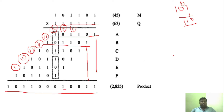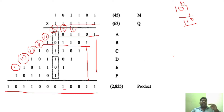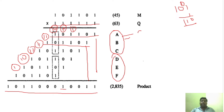Now, for carry save addition of summands, we group these six partial products: group A, B, C together and group D, E, F together. The computer performs these in parallel. Adding group A, B, C with carry save addition generates sum S1 and carry C1. Similarly, adding group D, E, F generates sum S2 and carry C2.